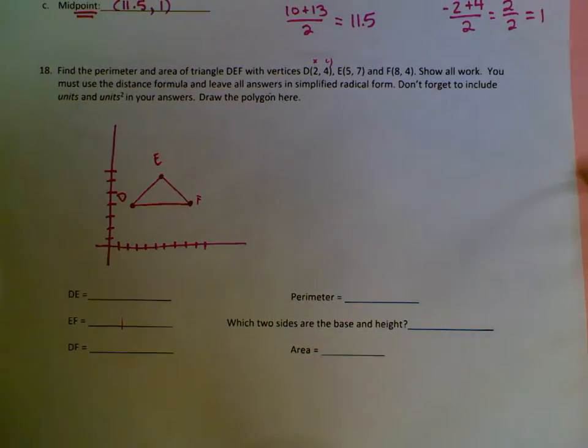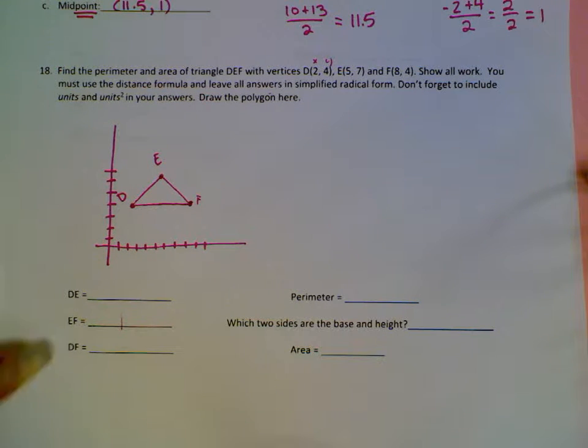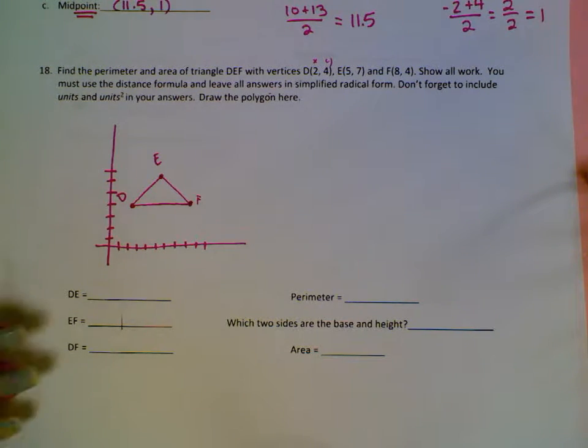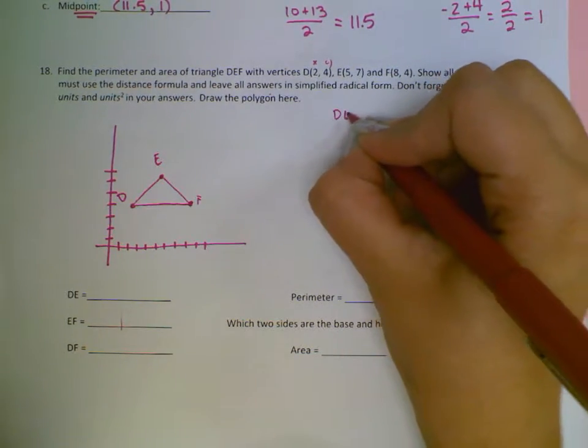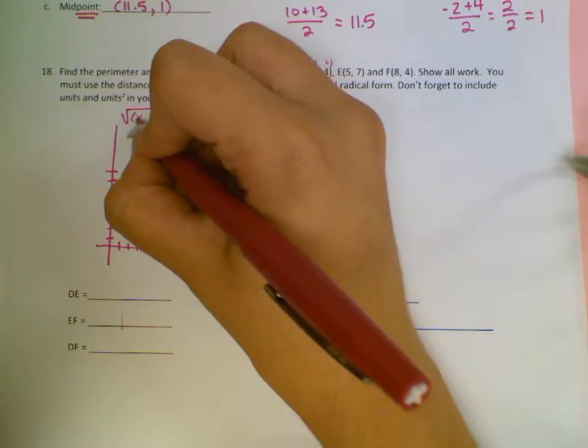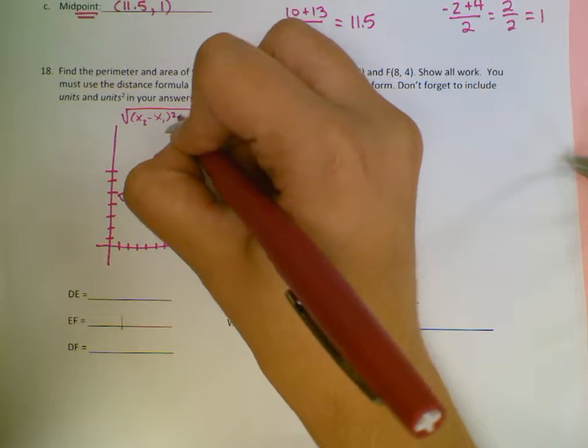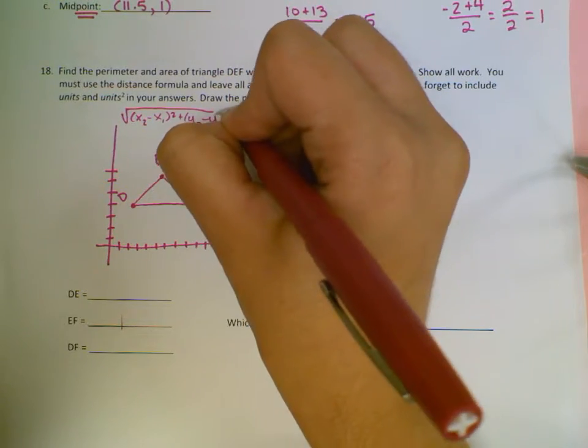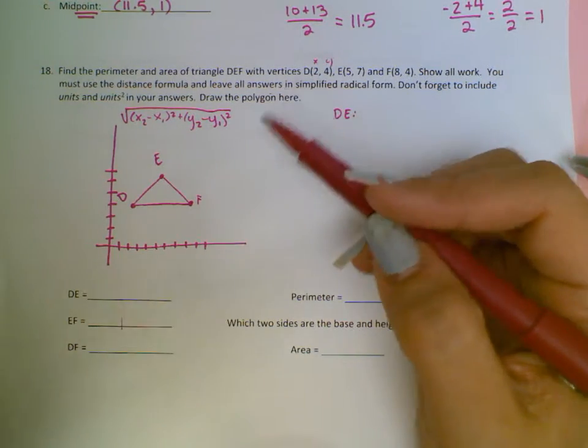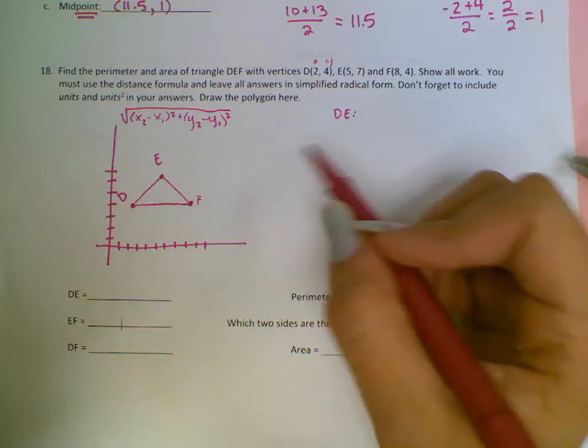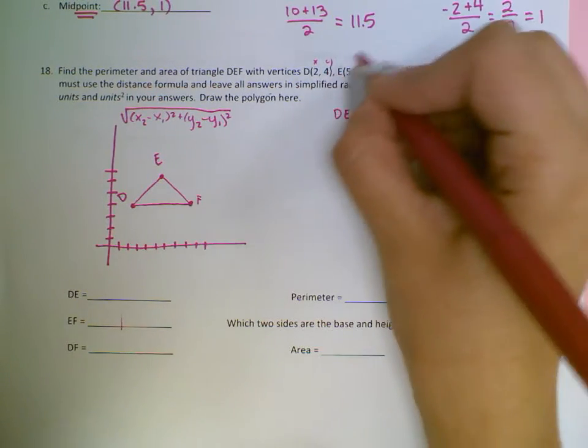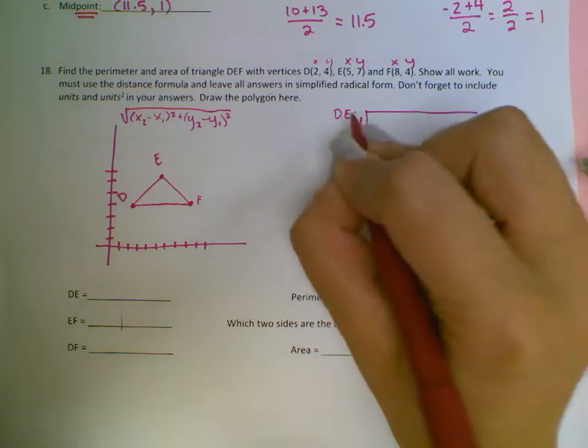Alright, so now I'm going to find all of these distances. So the distance of DE, I will do DE here. The distance formula is the square root of X2 minus X1 squared plus Y2 minus Y1 squared. This is the distance formula. This will be given to you on the blue formula sheet. The midpoint will not, so you need to know the midpoint formula, but the distance formula is given to you. To find the distance of DE, that's X, that's Y, this is X and Y, and this is X and Y.